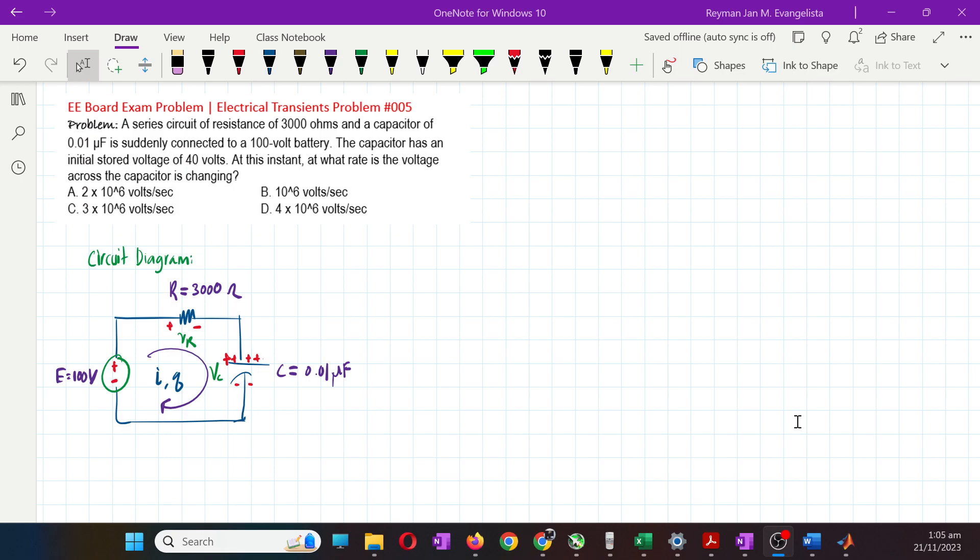Hello everyone, welcome to my YouTube channel. In today's video, we will solve another EE board exam problem. A series circuit of resistance 3000 ohms and a capacitor of 0.01 microfarad is suddenly connected to a 100 volt battery.